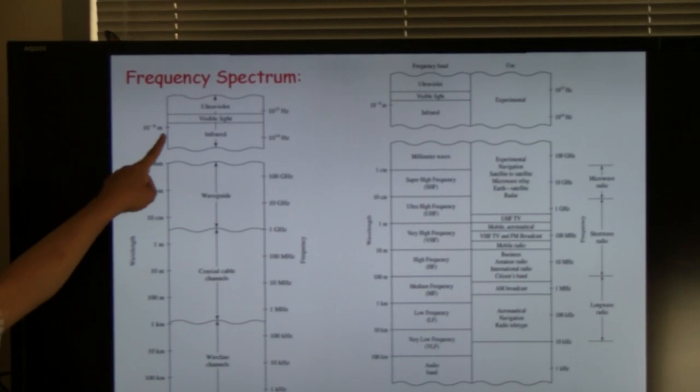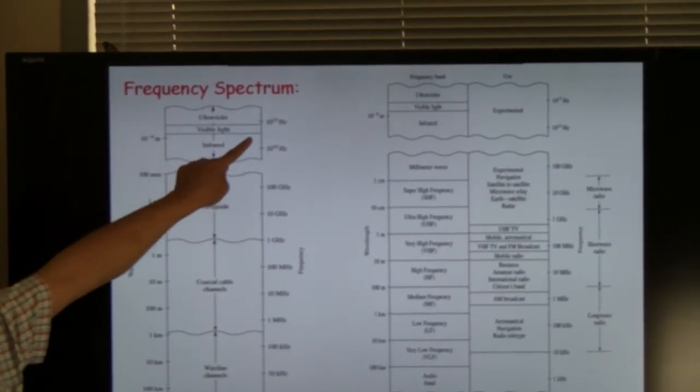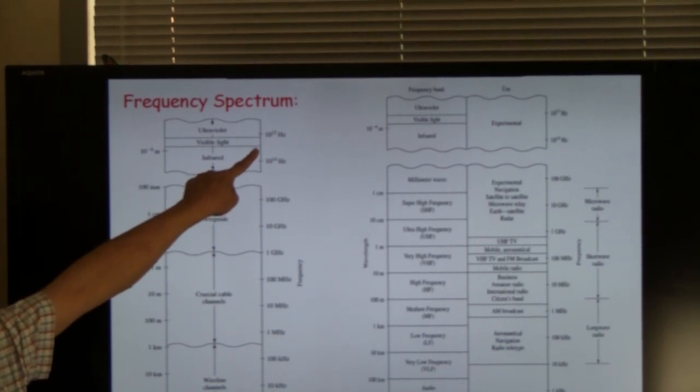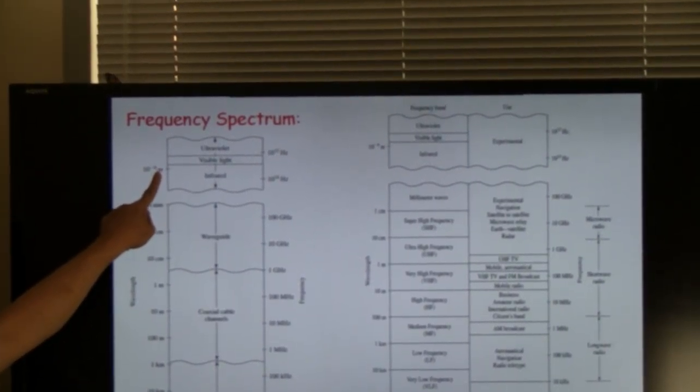What is interesting is that in the visible light region, you're talking about a frequency of close to 10^15 Hertz and a wavelength of about one micron or one millionth of a meter.